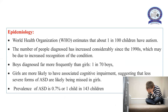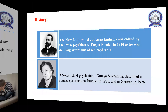Epidemiology: The World Health Organization estimates that 1 in 100 children have autism — that is quite a high proportion. The large number of people diagnosed has increased considerably since 1990, which may be due to increased recognition of the condition. Boys are diagnosed far more frequently than girls, at a proportion of 1 in 70. Girls are more likely to have associated cognitive impairment, suggesting that less severe forms of ASD are likely to be missed in girls. The prevalence of autism is 0.7%, or 1 child in 143 children.